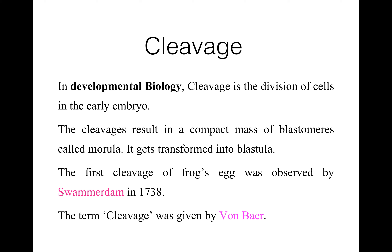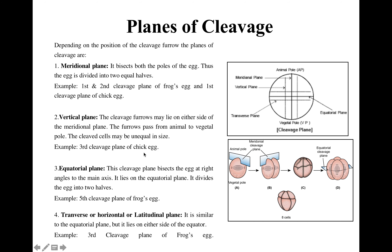Cleavage results in a compact mass of blastomeres called morula, which later gets transformed into blastula. The first cleavage of the frog's egg was observed by Swammerdam in 1738. The term cleavage was given by von Baer. Now, depending on the position of the cleavage furrow, the planes of cleavage may be meridional, vertical, equatorial, or transverse.